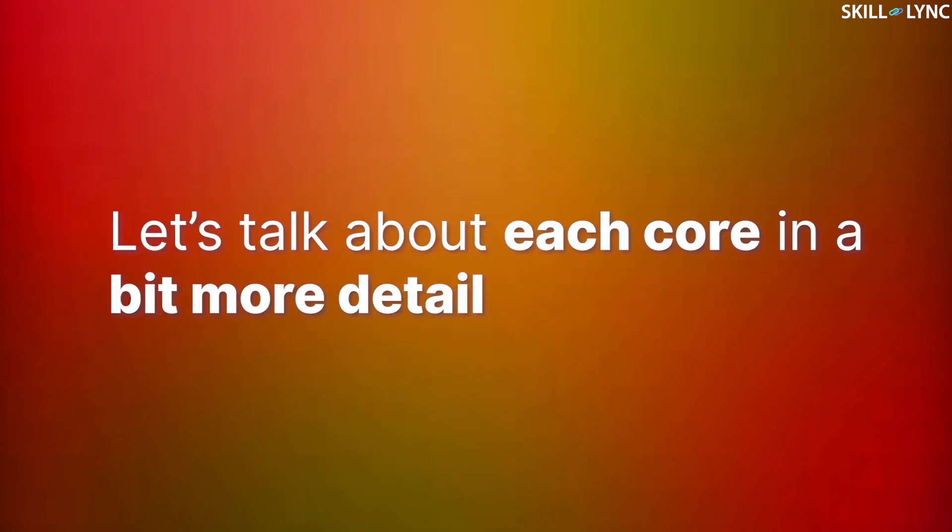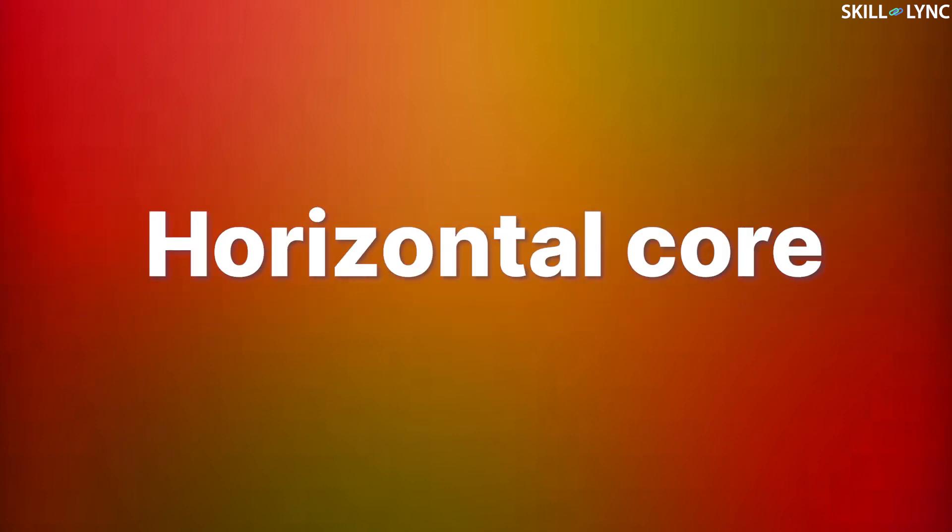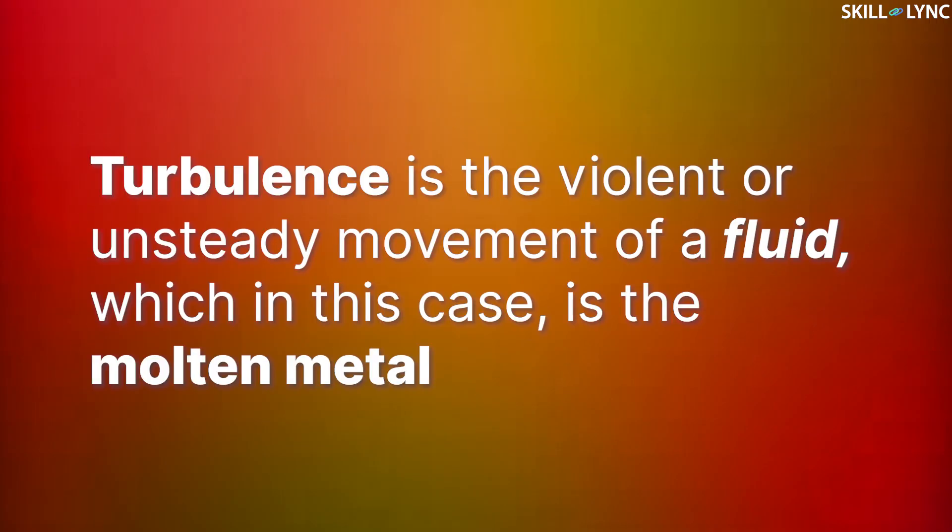Let's talk about each core in a bit more detail. Our first and the most common type of dry sand core is the horizontal core. As you can see in the image, horizontal cores are the ones which are placed horizontally at the parting line. This type of core can withstand turbulence effects generated when the molten metal is poured into the cavity.